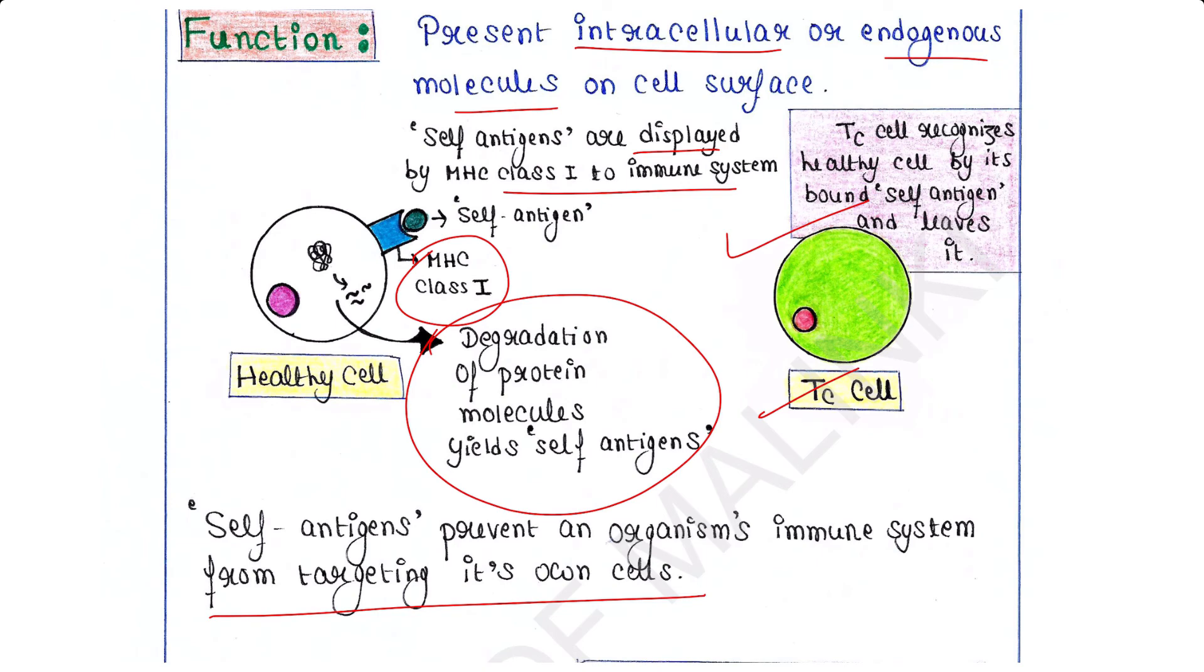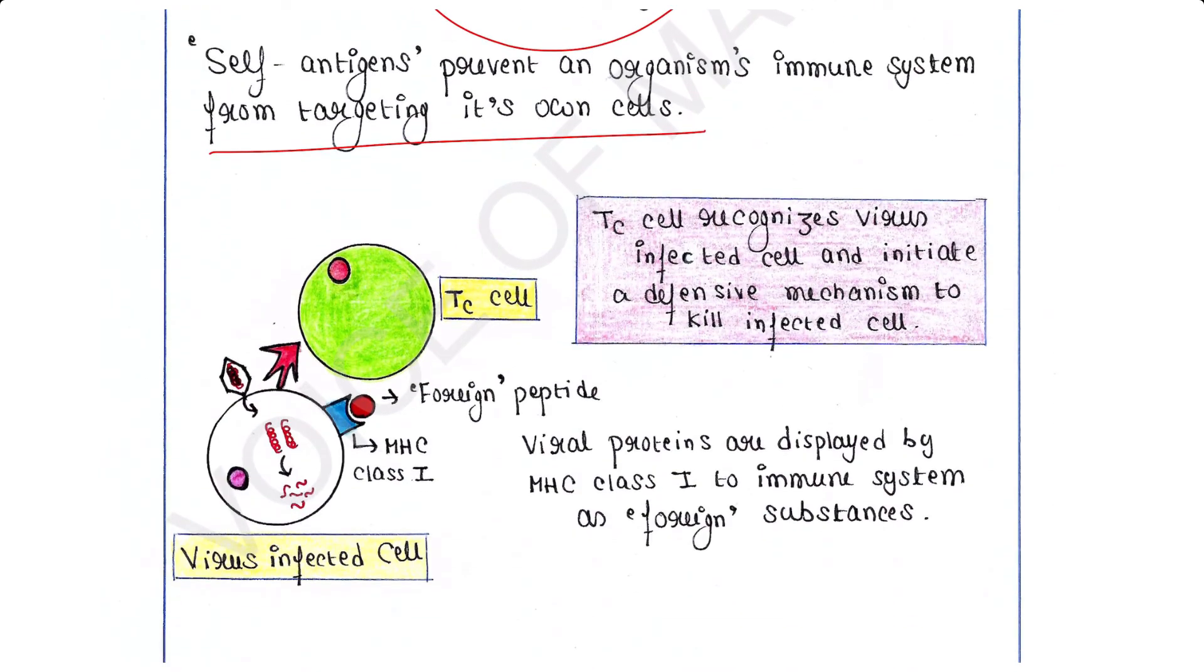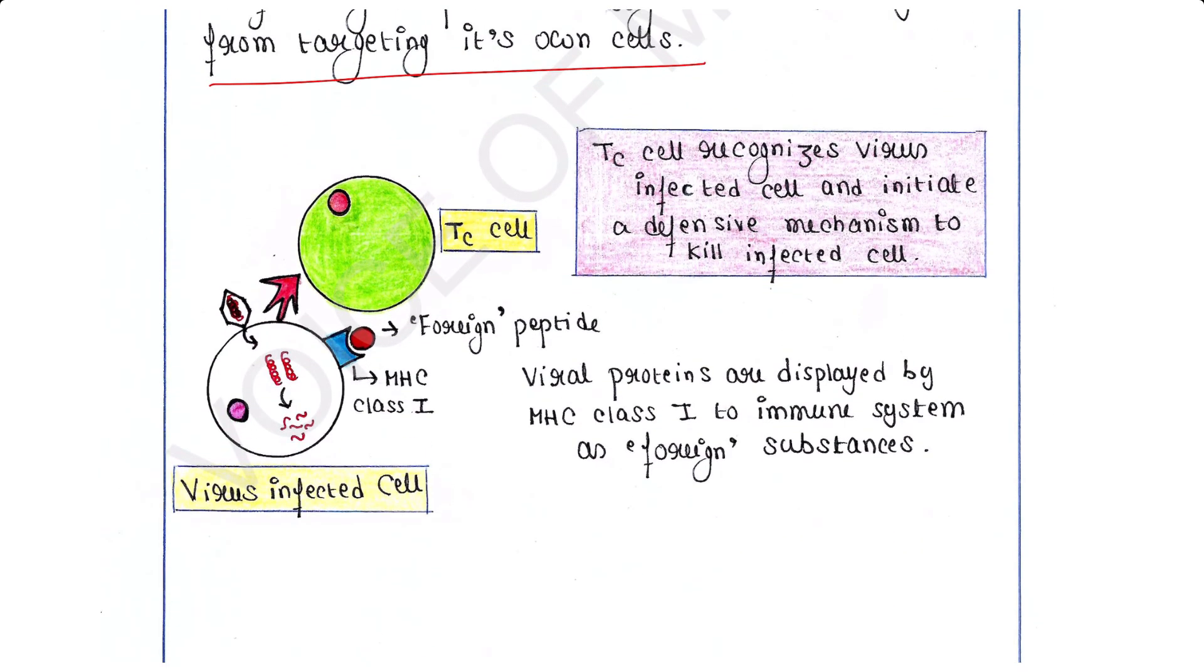But when a healthy cell is infected by virus, viral proteins are displayed by these MHC molecules as foreign substances. Tc cells can recognize them and initiate a defensive mechanism in order to destroy the infected cell.